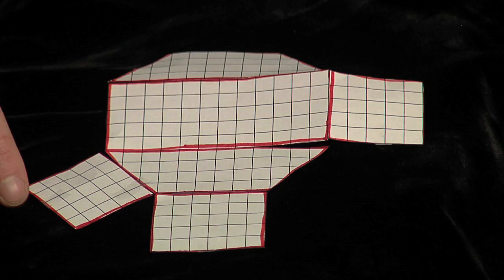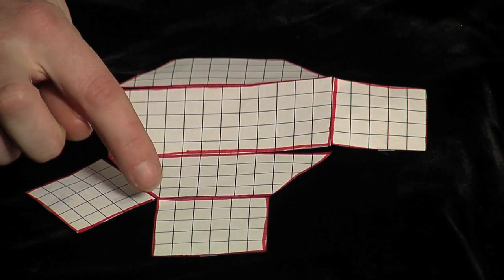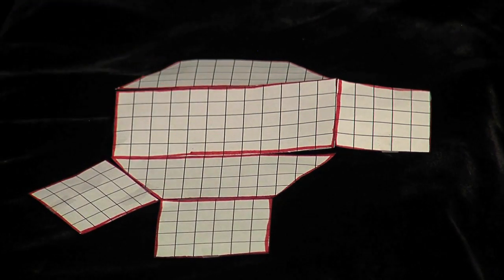For instance, this rectangle is a 5 by 5 rectangle, also known as a square, which has an area of 25. This is a 5 by 6 with an area of 30.